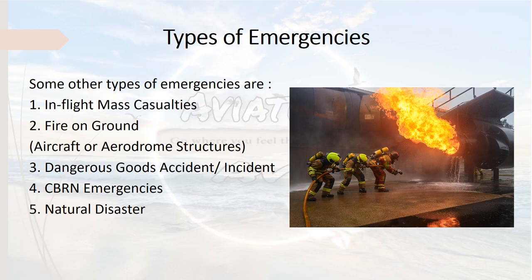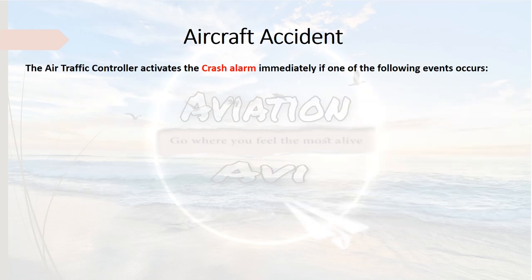Other types of emergencies include fire on ground related to an aircraft parked on the apron, or aerodrome structural fires such as building fires. Number three is dangerous goods accident or incident due to spillage or leakage of dangerous goods. Number four is CBRN emergencies — chemical, biological, radiological, or nuclear emergencies. Number five can be emergencies declared due to natural disasters.